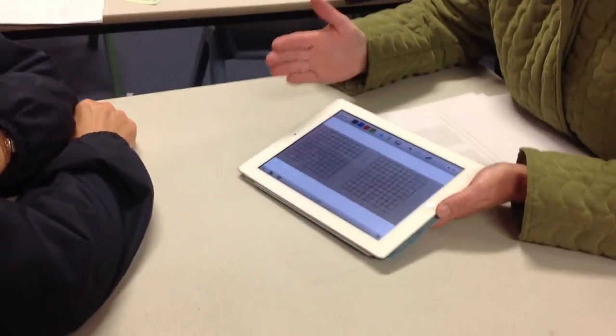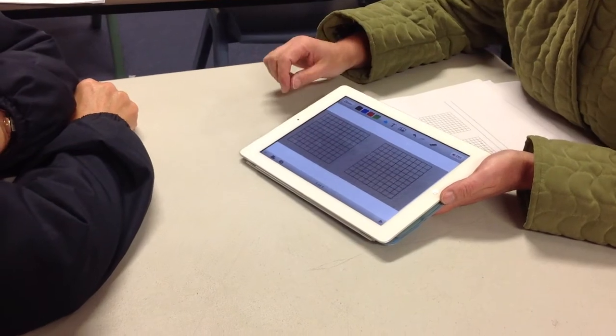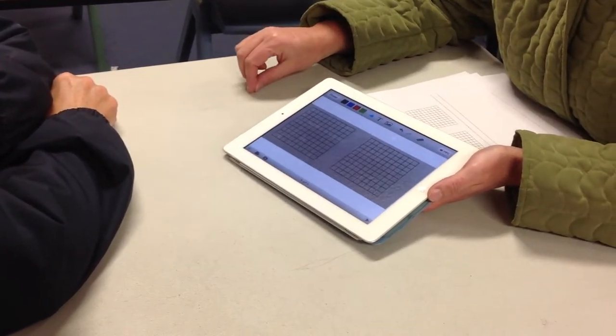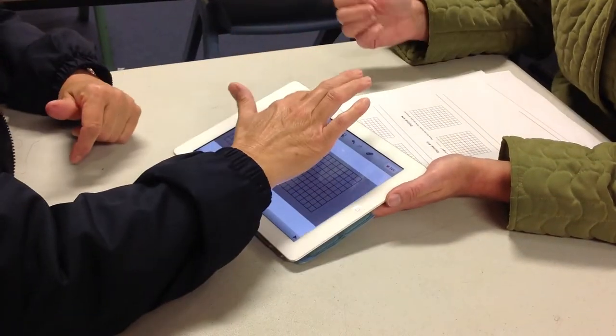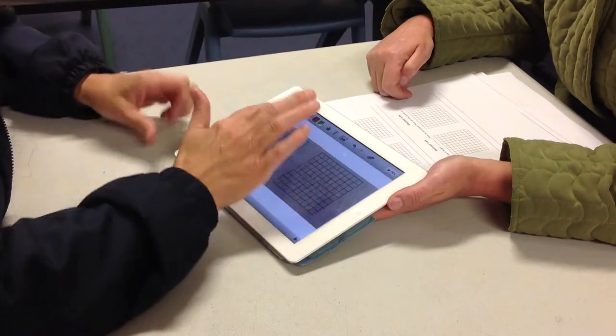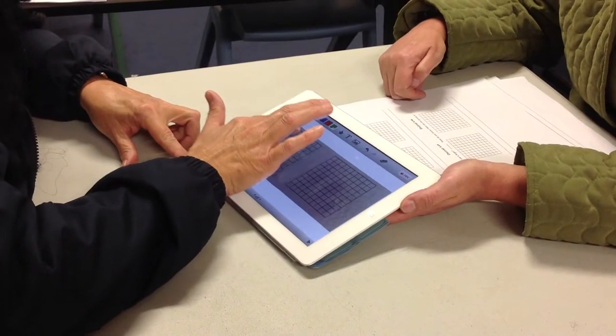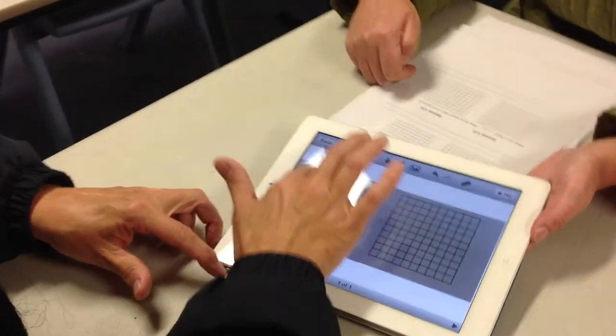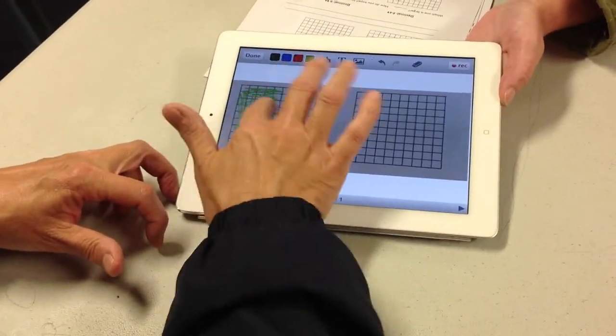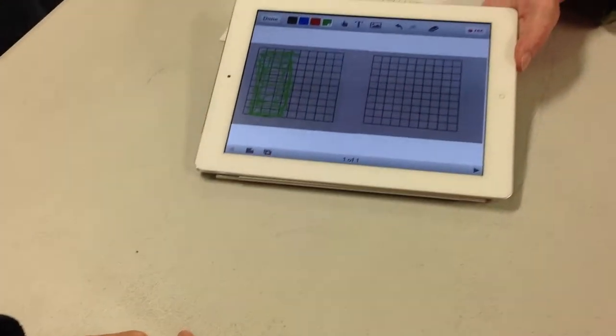So if I wanted you to find 0.5 of 100, can I pick any colour? Yeah, what would that be? Because I know that's going to be half. Okay, exactly, half. So that's 50 squares I just coloured in there. How quick was that? Fantastic.